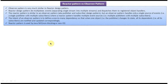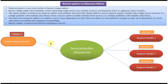First we will see how the observer design pattern works. In the observer design pattern there will be a single publisher and there will be many subscribers. All the subscribers have to register in the service handler or dispatcher. So when the publisher publishes some event to the service handler, the service handler will check how many subscribers are registered, and you can see there are three subscribers registered. When an event comes from the publisher it will send that event to all the registered subscribers.